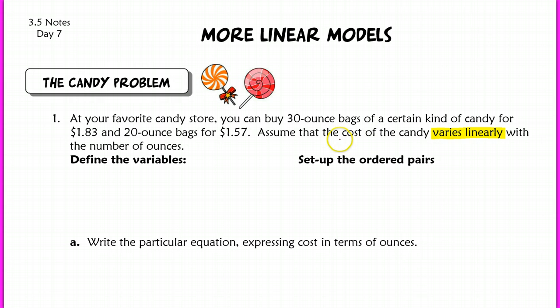So right away we should recognize that the cost of the candy is going to represent our y variable. The number of ounces will represent our x. So this is something you should be very comfortable with now that we've gone over the vocabulary. So let's define our variables. I'm going to say x is the number of ounces of candy. And y is the price or the cost of the candy. Now to set up our ordered pairs we want to look at x comma y. So we want to make sure that the number of ounces of candy comes before our price. So if we match up 30, that will go with $1.83 and 20 ounces should match up with $1.57.